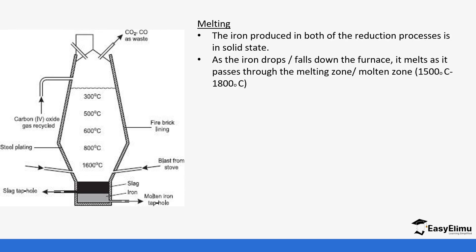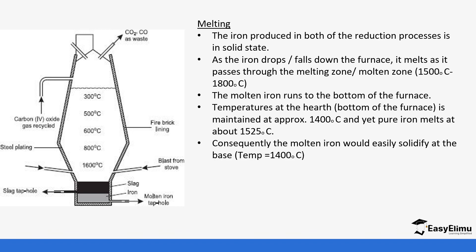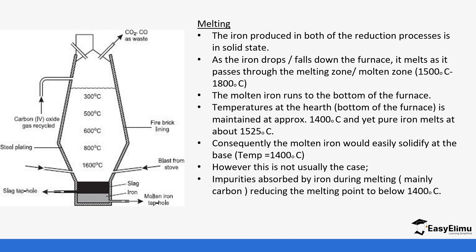Iron produced in both reduction processes is initially in solid state and trickles down in the blast furnace, changing into molten state due to the very high temperatures. The molten iron runs to the bottom of the furnace and is tapped off. The temperature at the bottom is maintained at 1400 to 1500 degrees Celsius. The impurities present lower the melting point of iron, keeping it in a molten state rather than solidifying.